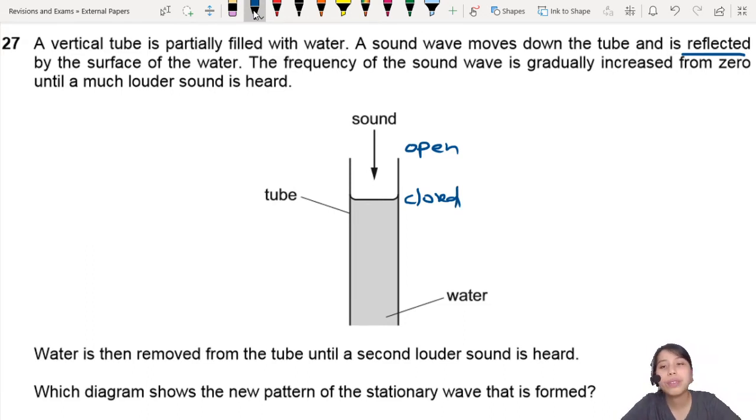So you'll form a stationary wave in the top part. The frequency of the sound wave is gradually increased from zero until a much louder sound is heard. So here you are changing the frequency, F is your variable. So you have different kinds of patterns forming inside there.